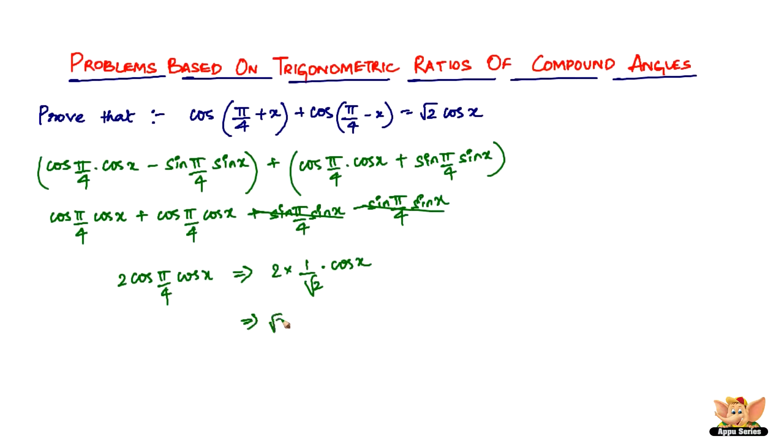You can write 2 as root 2 times root 2 into 1 by root 2 times cos x. So root 2 root gets cancelled. And we've got root 2 cos x which is equal to right hand side. It was a pretty simple problem I'd say.